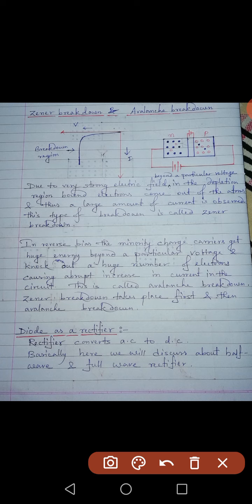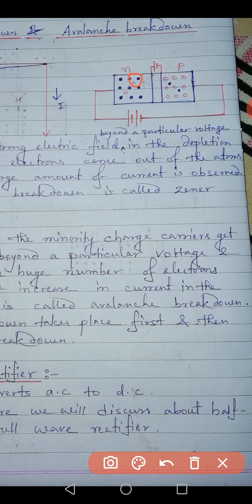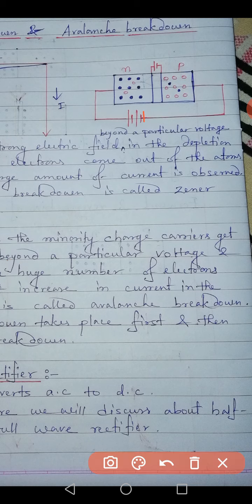Another kind of breakdown observed in reverse bias is called avalanche breakdown. In avalanche breakdown, in reverse bias the minority charge carriers gain huge energy beyond a particular voltage. As I mentioned earlier, the small reverse current — in the order of micro-amperes — is due to minority carriers: the few holes present in the N region and the few electrons present in the P side. These minority carriers cross the depletion region driven by the battery.